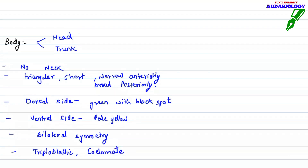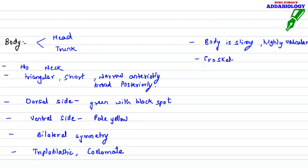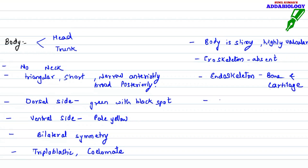The frog is coelomate, meaning it has a well-developed true body cavity. Triploblastic means it has ectoderm, endoderm, and mesoderm. The body is slimy — slippery — and highly vascular. Frog is considered the most poisonous animal on Earth. Note: poisonous, not venomous — venomous is snake. Frogs have no exoskeleton, no hair, no nails; they have an endoskeleton made up of bones and cartilage.